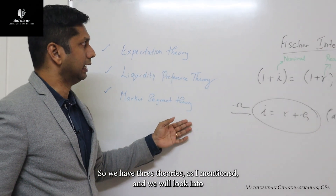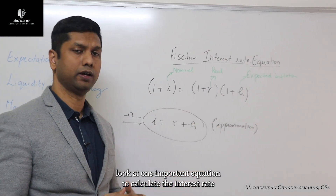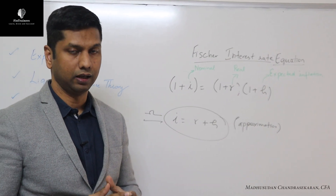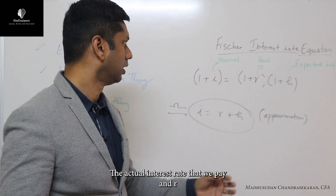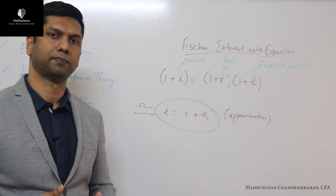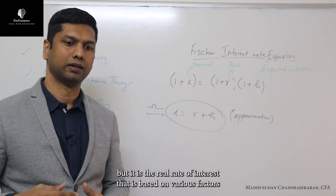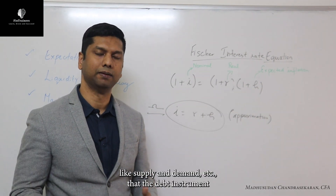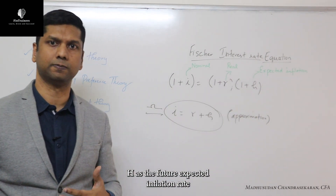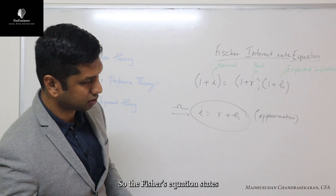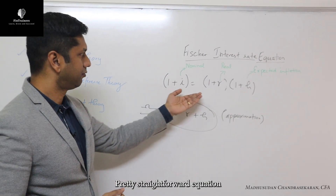We have three theories and we will look at all three. First, let's look at one important equation to calculate the interest rate. Let I be the nominal interest rate — the actual interest rate that we pay. Let R be the real rate of interest, which is based on various factors like supply and demand that the debt instrument will yield. And H is the future expected inflation rate. Fisher's equation states that one plus I equals one plus R, multiplied by one plus H.